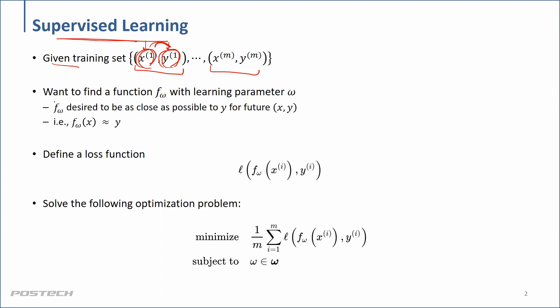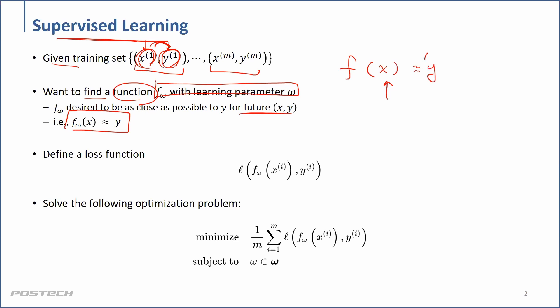What we want to do in supervised learning is find a function f. Whenever we have new observations x, we want to estimate y — or y-hat. So the goal is to figure out f, which is the general expression of the function.